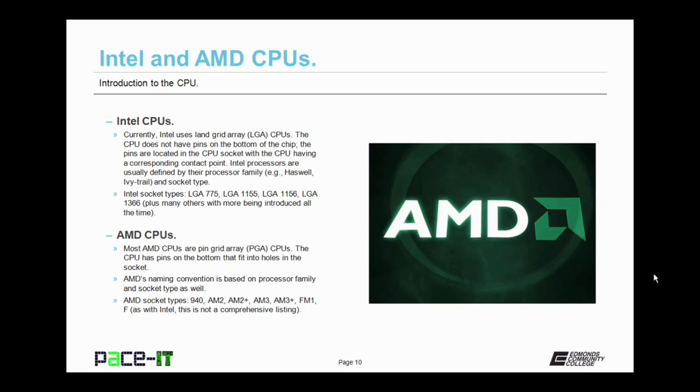Now let's move on to Intel's main competitor, AMD. Most AMD CPUs are pin grid array CPUs, PGA CPUs. The CPU has pins on the bottom that fit into holes on the socket. AMD's naming convention is also based on processor family and socket type as well. Some AMD socket types that you'll see are the 940, the AM2, the AM2+, the AM3, the AM3+, the FM1, and the F. As with Intel, this is not a comprehensive listing, plus there are more being created all the time.